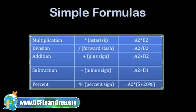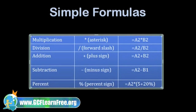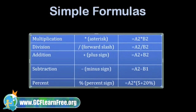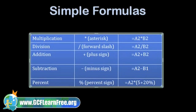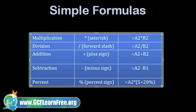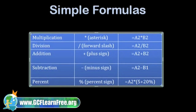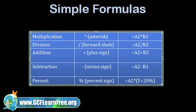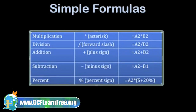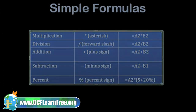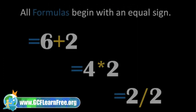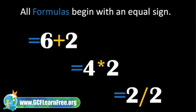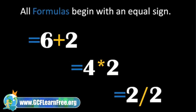In school, you used formulas to calculate math problems like 2 plus 2 equals 4, or 20% off of $100. Microsoft Excel uses these same formulas to perform spreadsheet calculations. A formula is an equation that performs a calculation using values in the worksheets. You're probably used to seeing equations like 2 plus 2 with an equal sign after it, but in Excel, every formula starts with the equal sign.